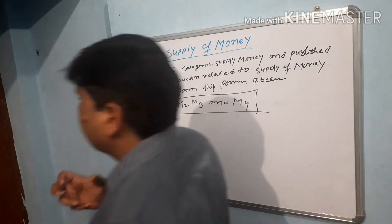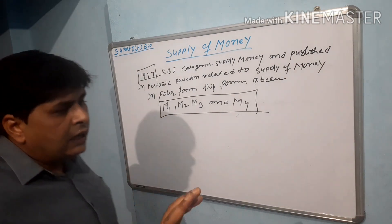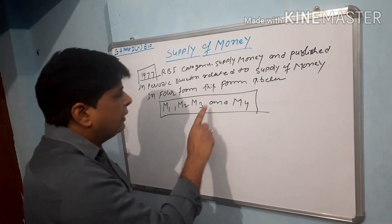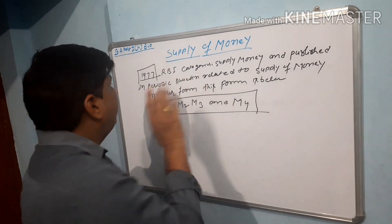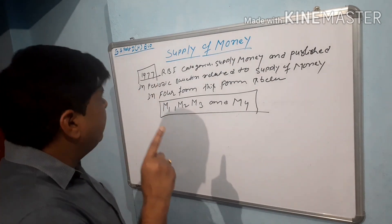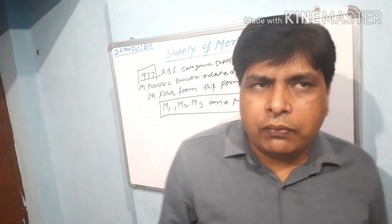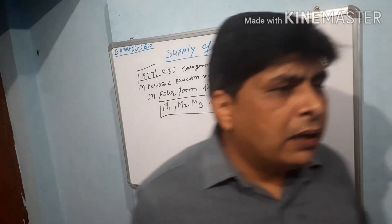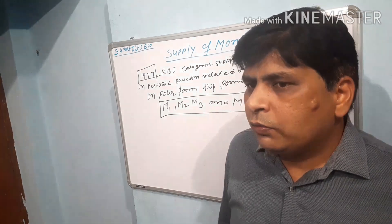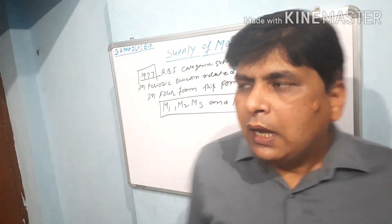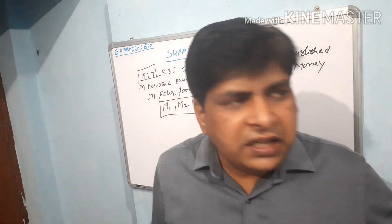Narrow money और broad money — इस तरह के forms में money बताया गया है। M1, M2, M3, M4 में liquidity यानि तरलता किसमें ज्यादा है और किसमें कम है, यह RBI ने 1977 के periodic bulletin में बताया। India में supply of money four forms में है, जबकि America में only two forms हैं — M1 और M2.